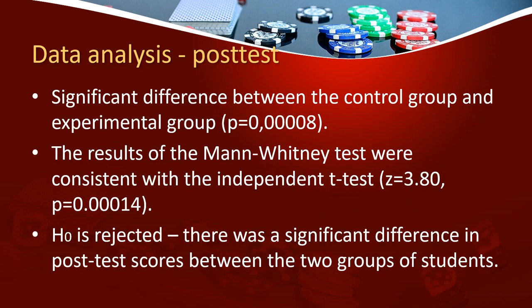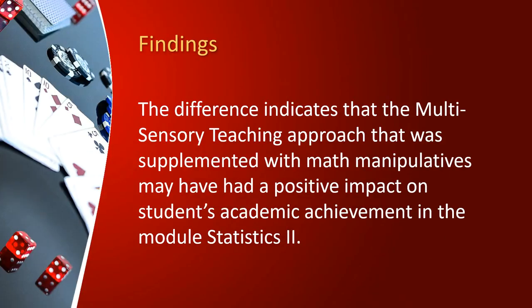With the post-test data analysis, there was a significant difference between the control group and the experimental group — the P-value is far less than 0.05. The results of the Mann-Whitney test further confirmed this, with Z = 3.80 and a P-value of 0.0014. Therefore, the null hypothesis is rejected, and we can conclude that there was a significant difference in post-test scores between the two groups. The findings suggest that the multisensory teaching approach supplemented with math manipulatives may have had a positive impact on students' academic achievement in the module Statistics 2.